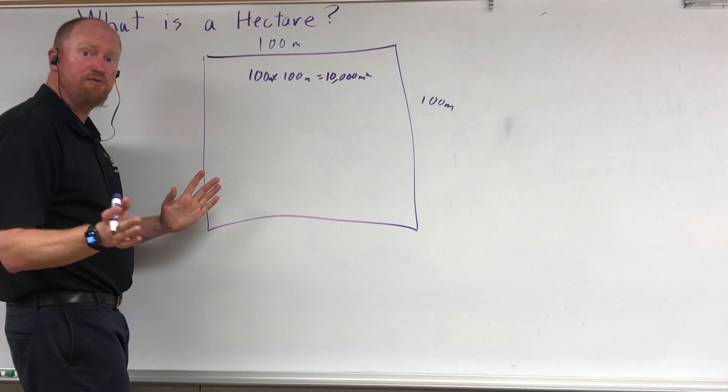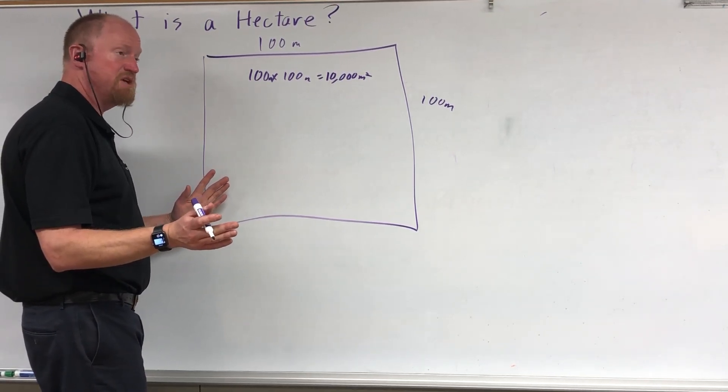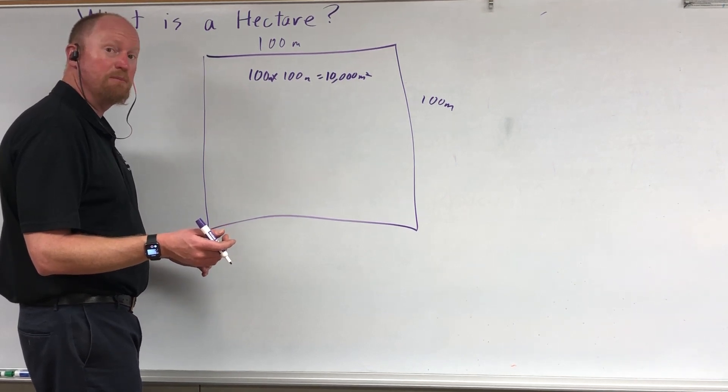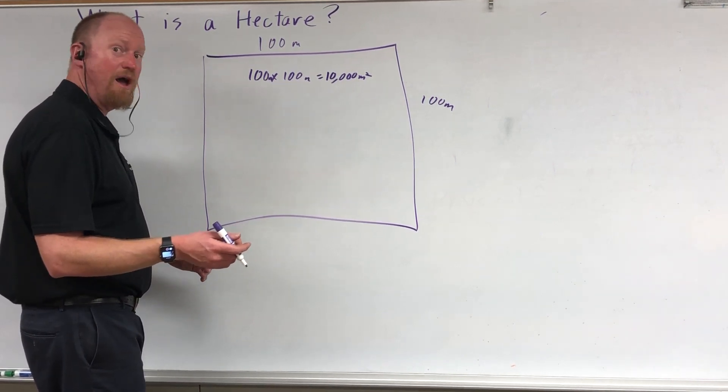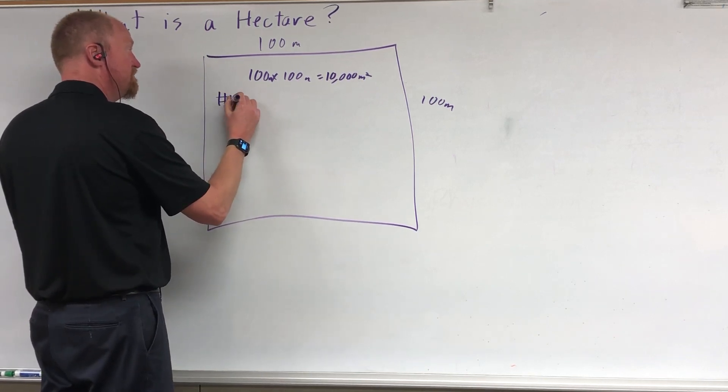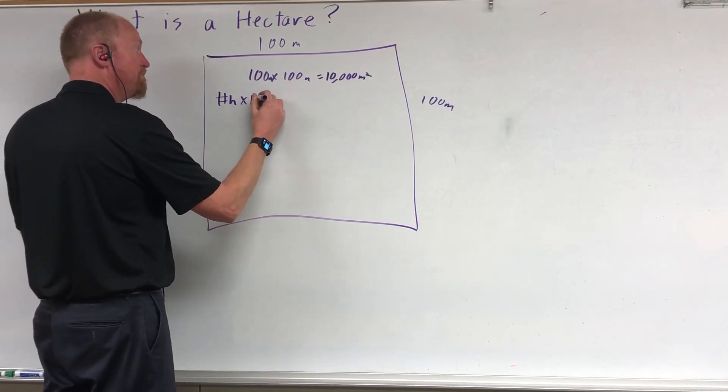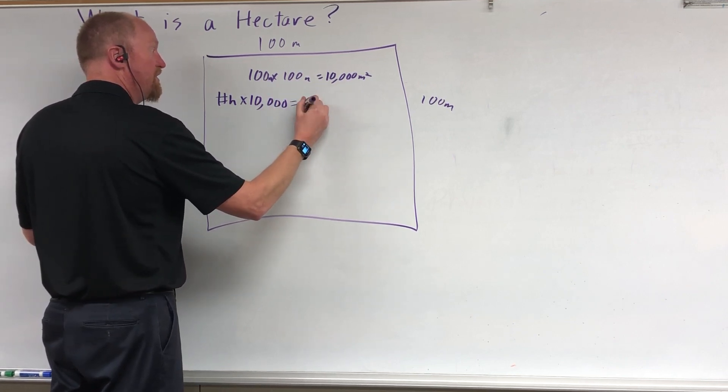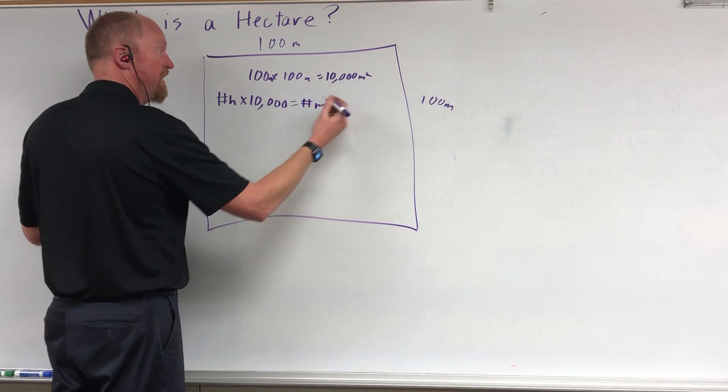So if you have to convert something from hectares to meters, I don't know, you have a piece of land and you're thinking about having it upholstered and you want to know how much fabric to buy, you simply take the number of hectares and multiply it by 10,000, and that'll give you the number of meters squared.